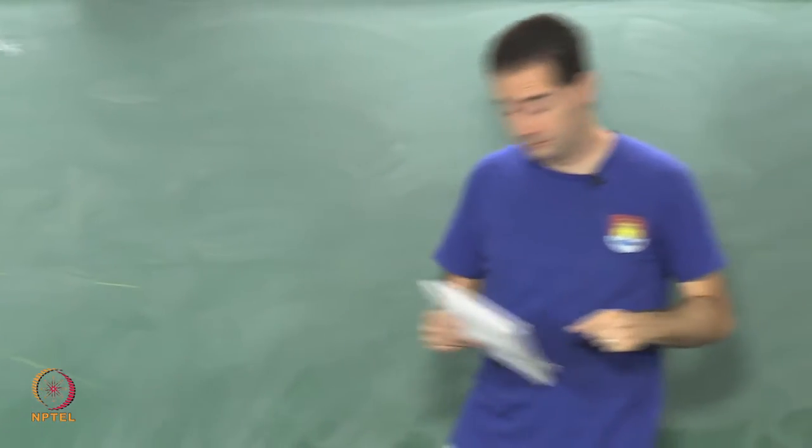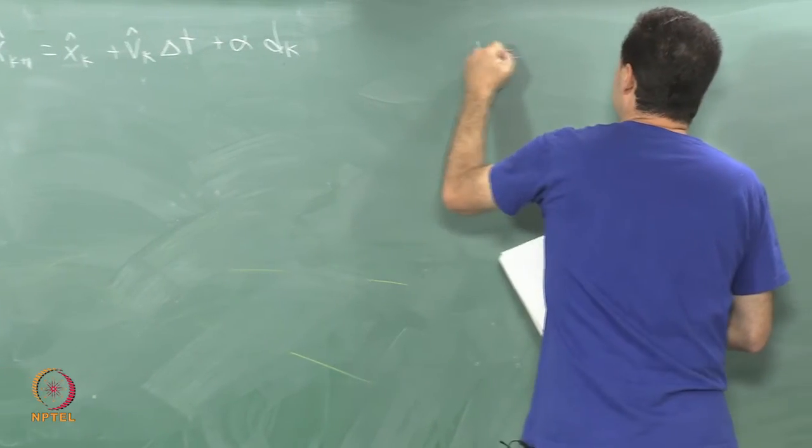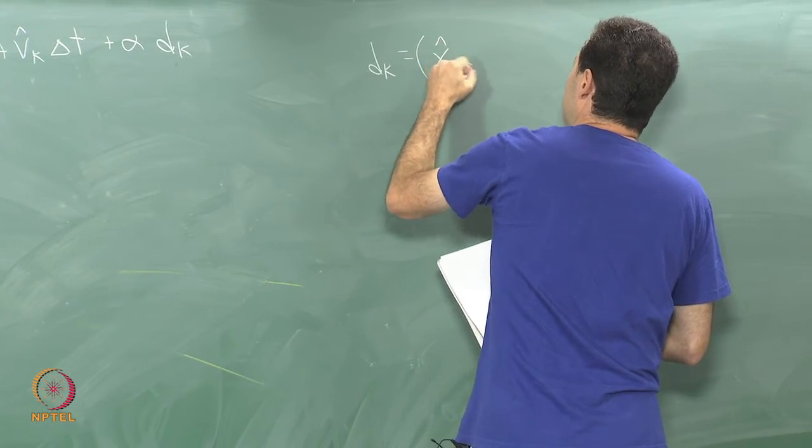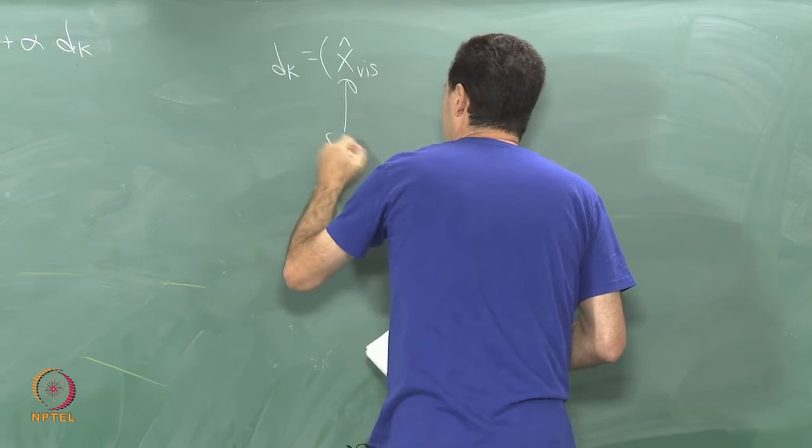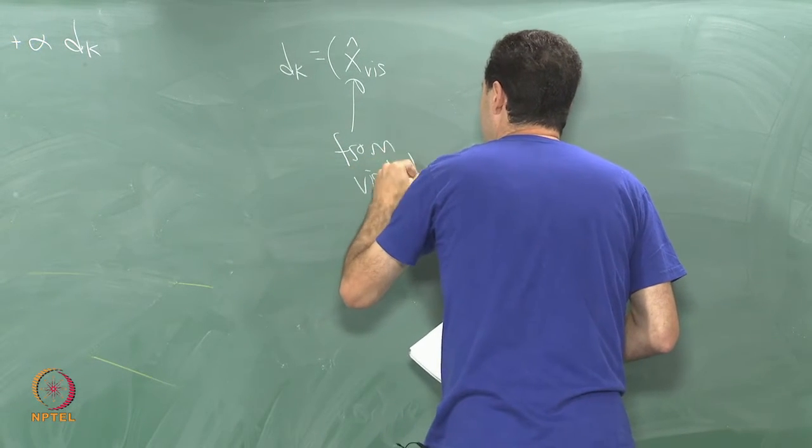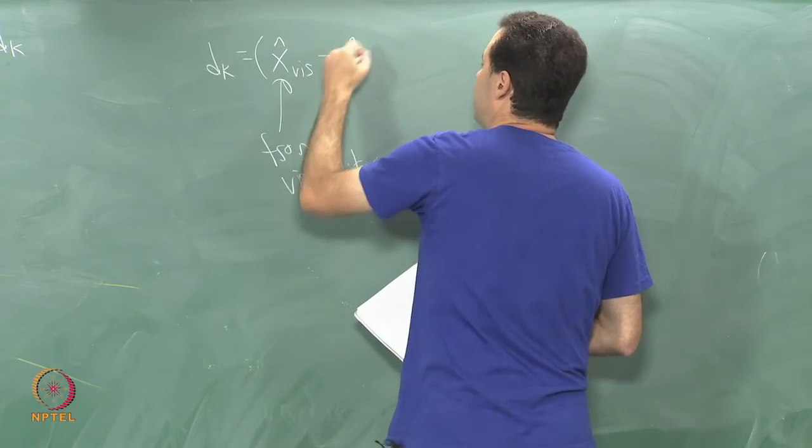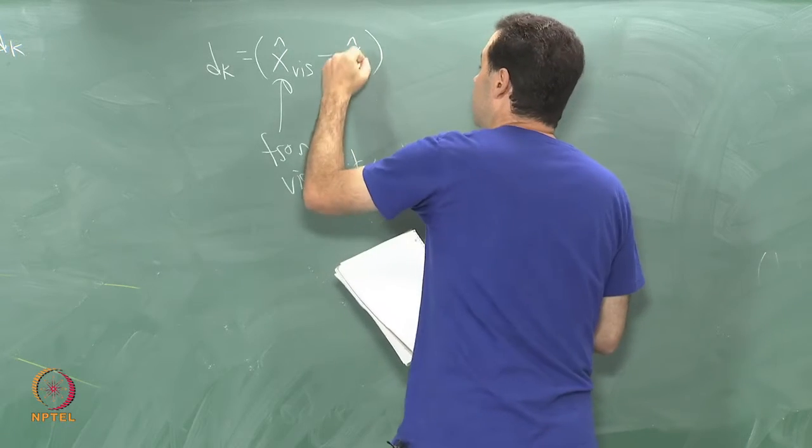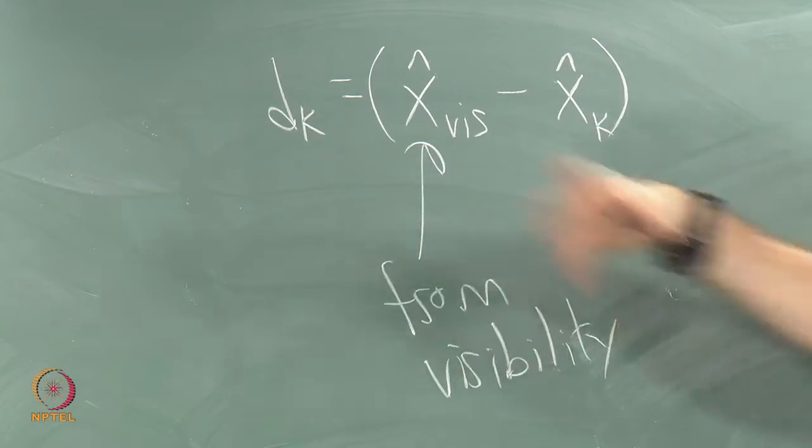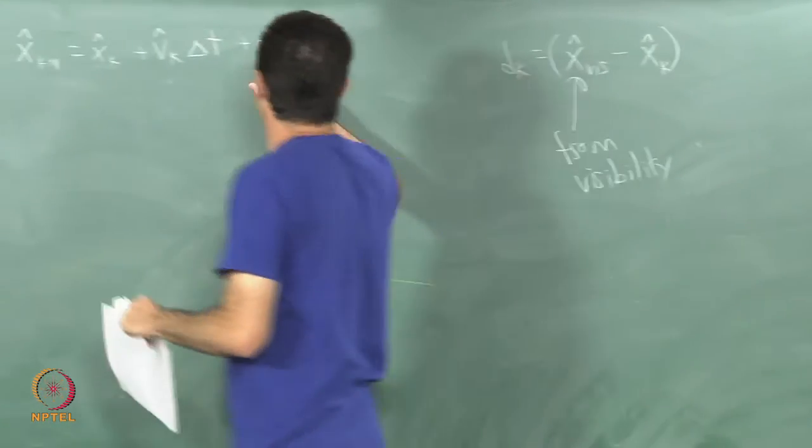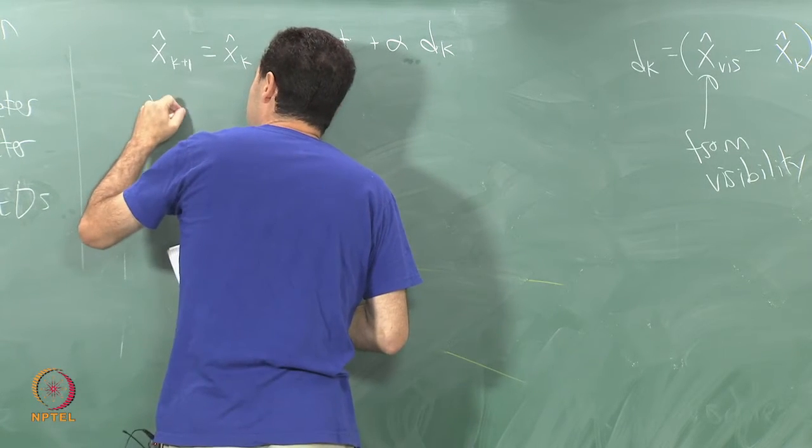Let me just write that out: d sub k is equal to, let's say, x hat based on visibility from visibility, or in other words from the camera, minus this is what I have estimated inside of my filter that I am building here. I get some measurement of the error and I need to correct for that, so I am going to correct using this term, and then I also have an update equation here for the velocity.